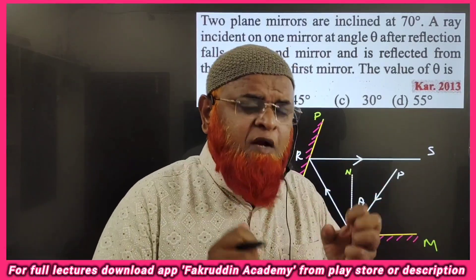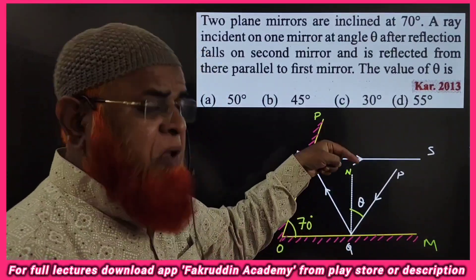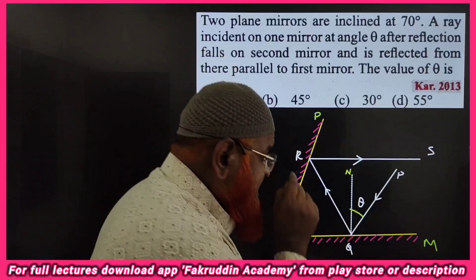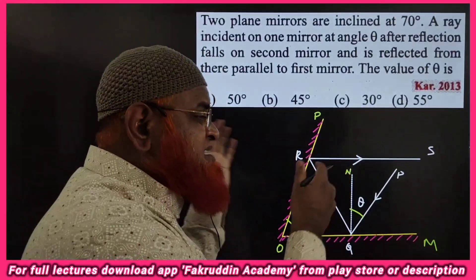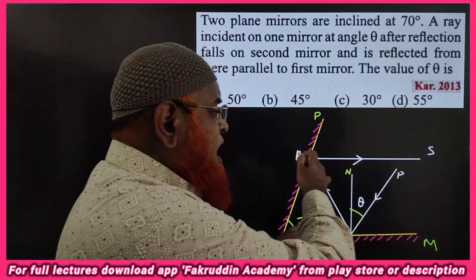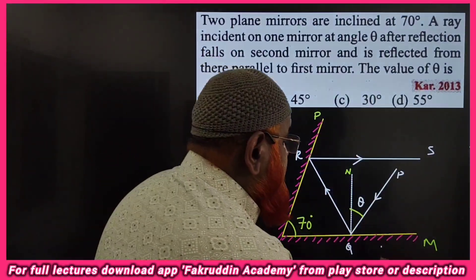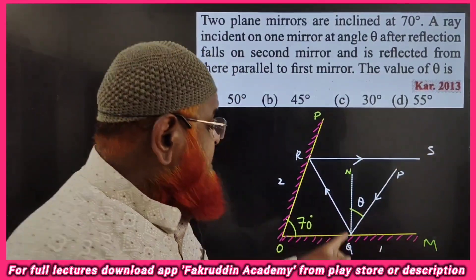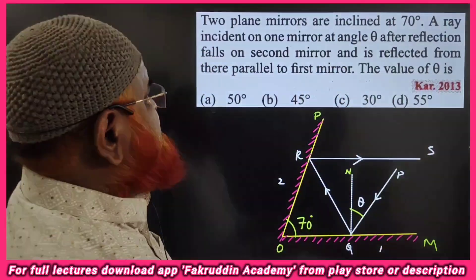This is a previous year question regarding reflection. There are two mirrors OM and OP. A light ray enters along PQ, strikes the first mirror, reflects, strikes the second mirror, then reflects and comes out. The light ray is incident on the first mirror at angle theta, takes double reflections, and comes out.